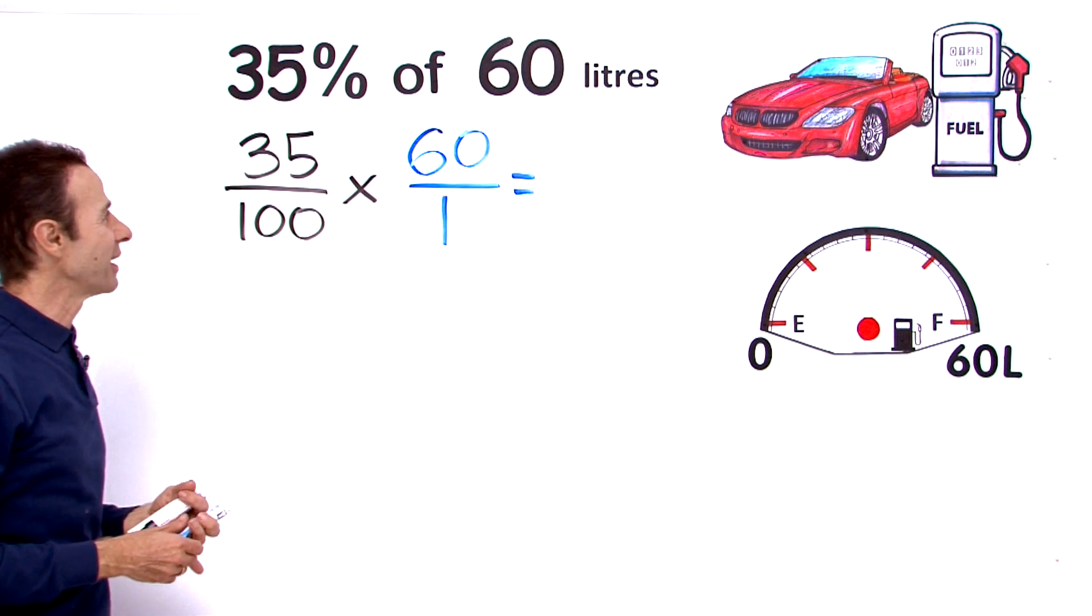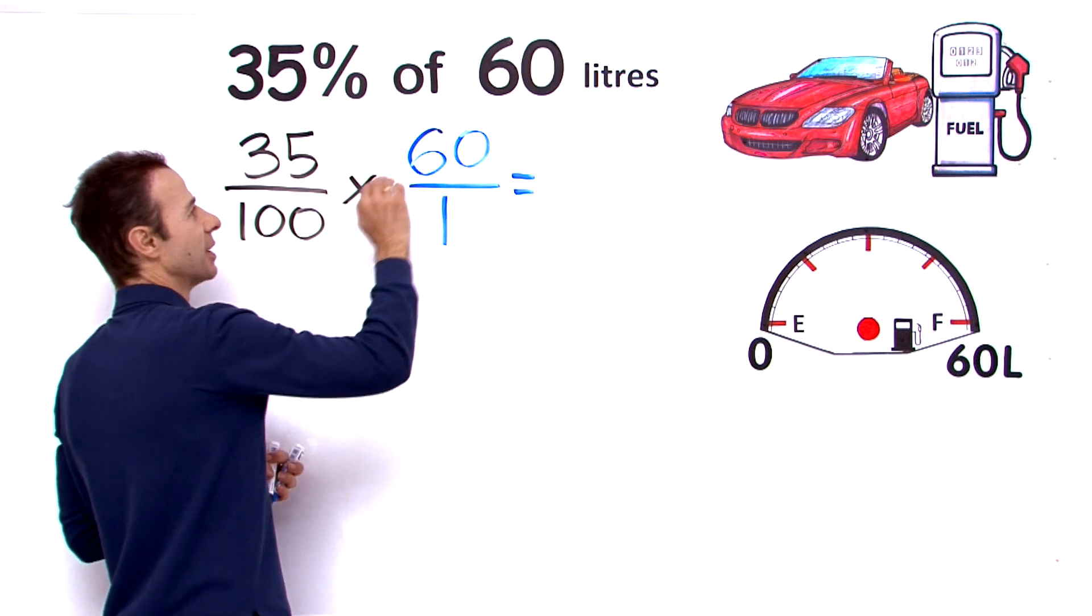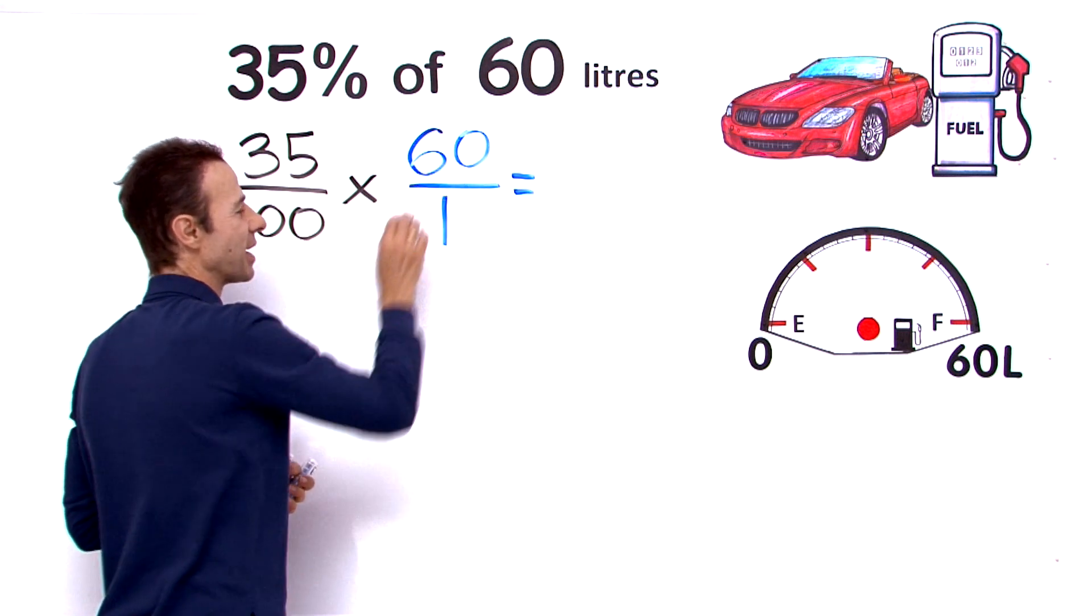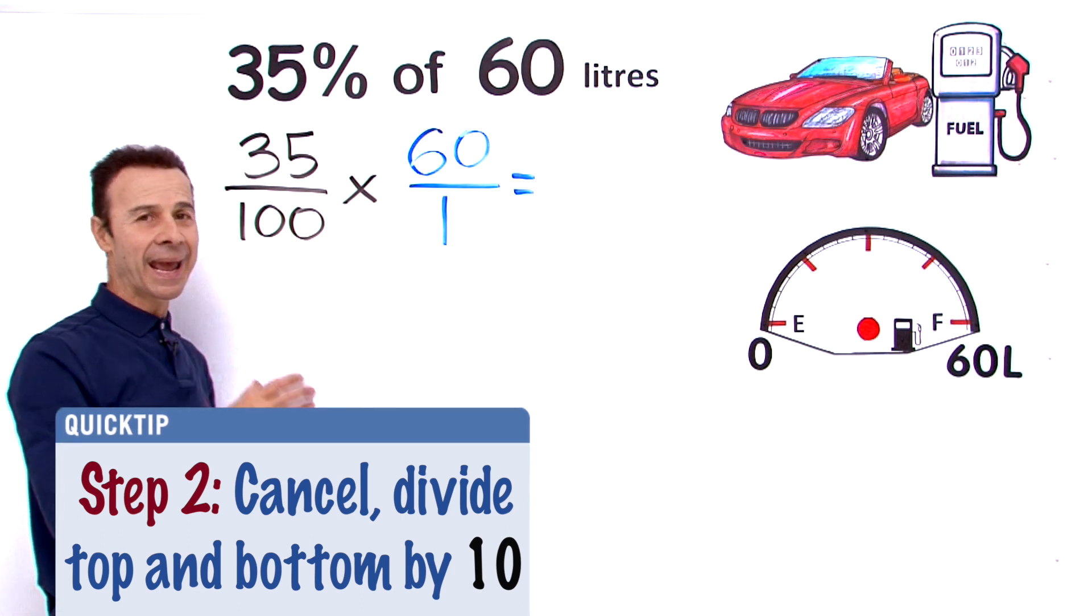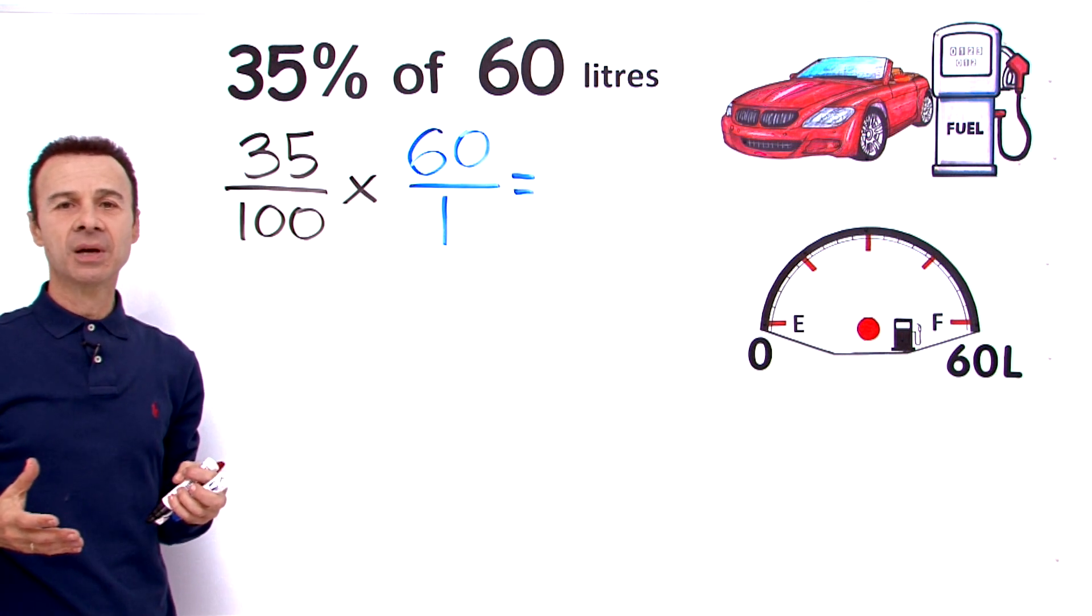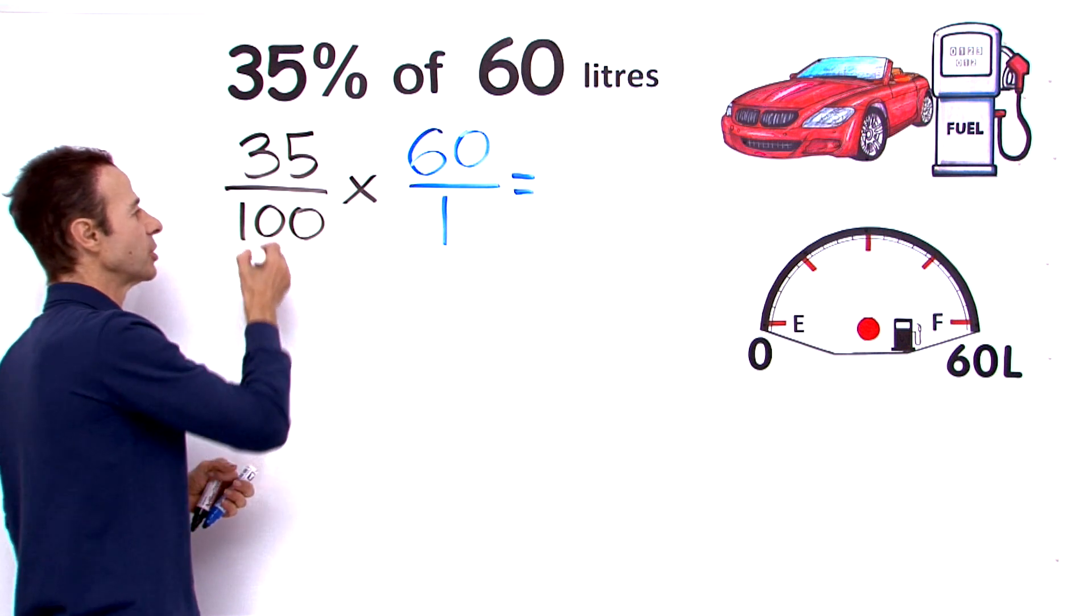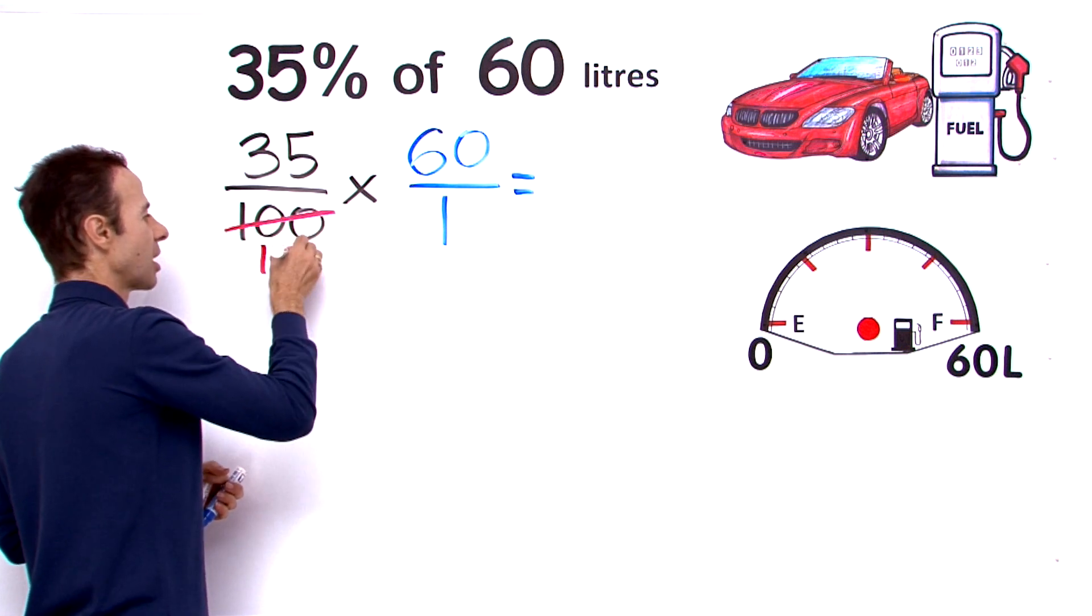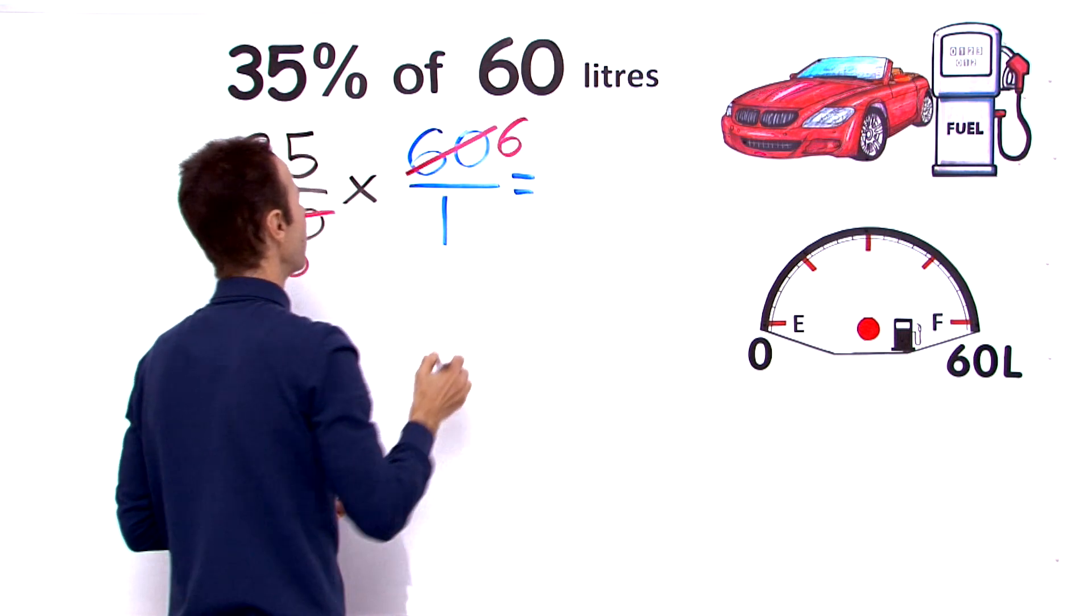So let's go ahead and work this out. Now I'm going to cancel diagonally between the bottom left and the top right, between the 100 and the 60. So what number divides into 100 and 60? What would be the highest? I would say 10 goes into both numbers. How many times does 10 go into 100? It goes in 10 times. How many times does 10 go into 60? It goes in 6 times.